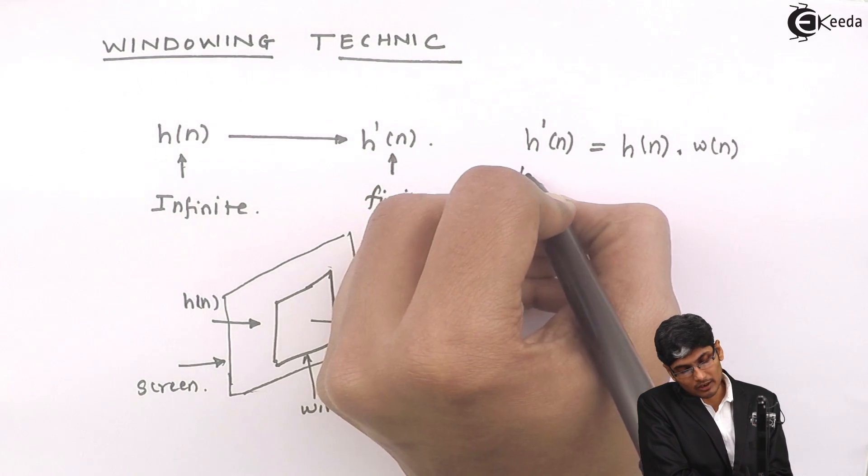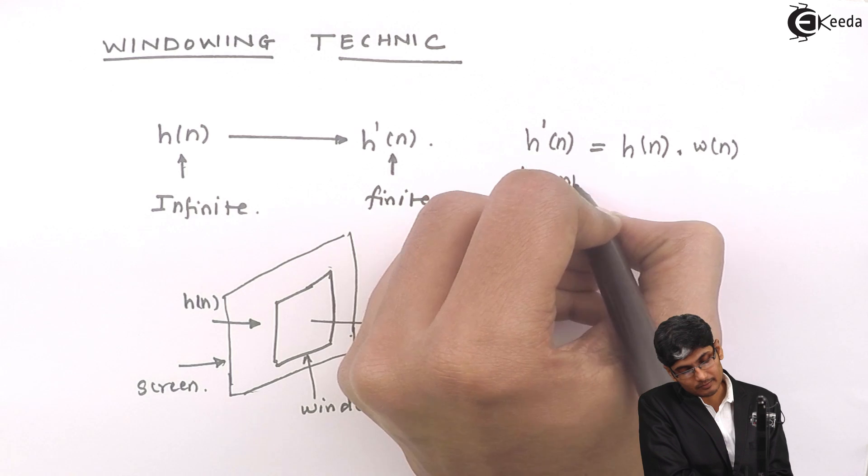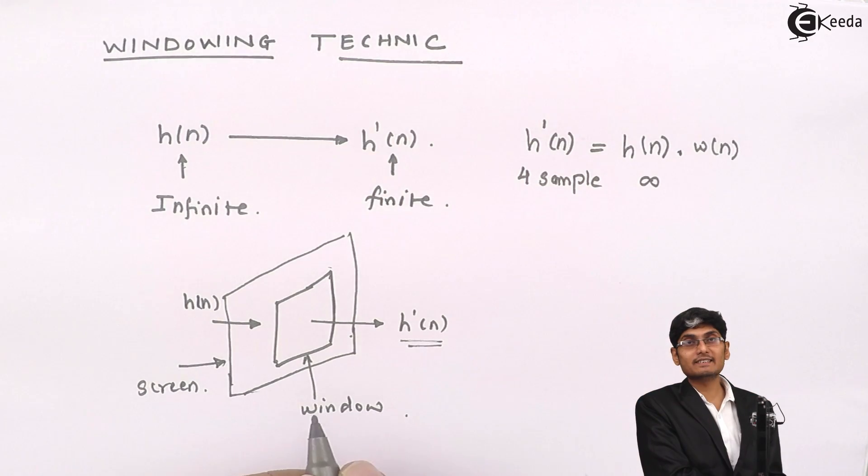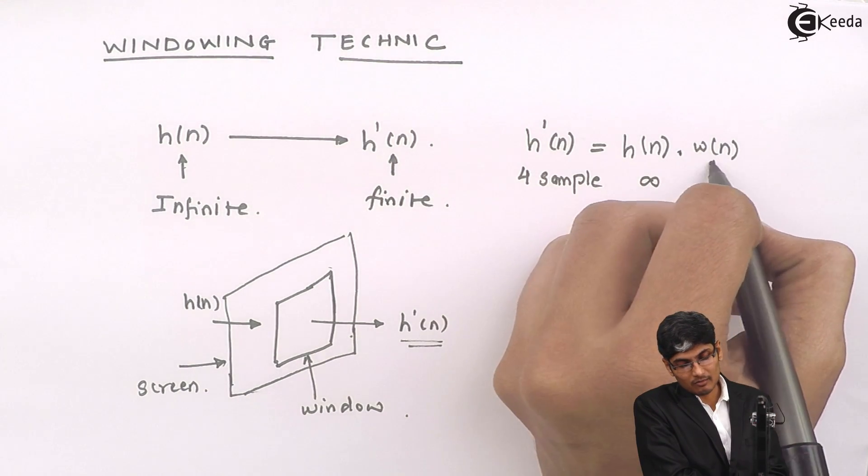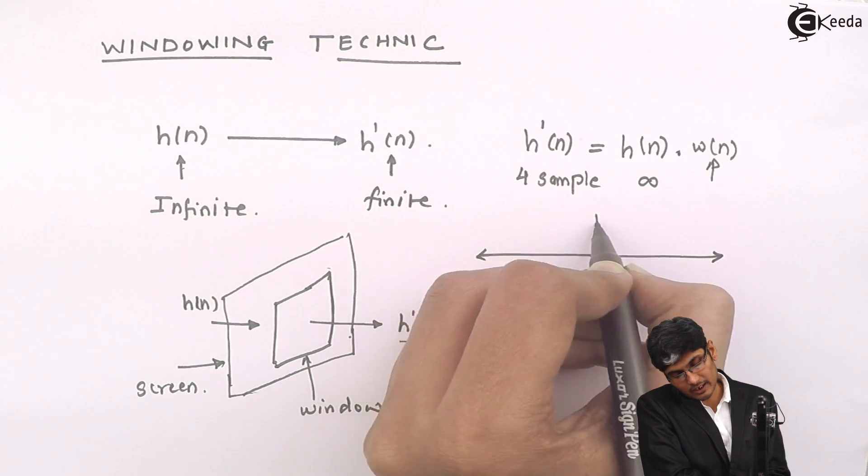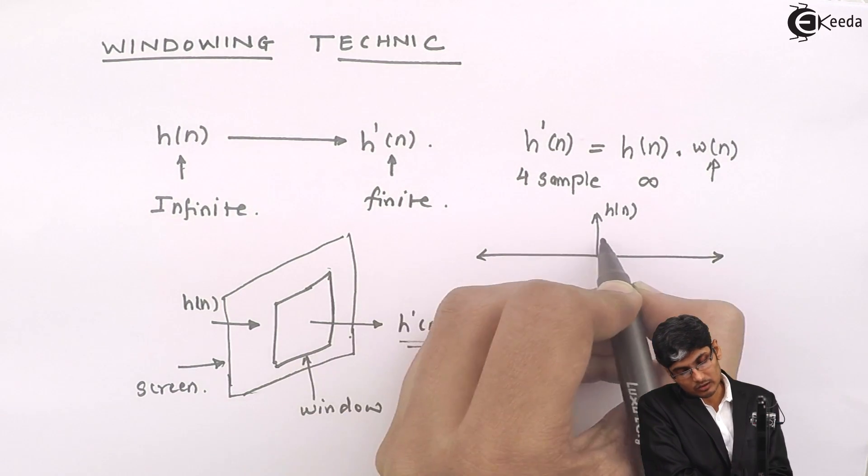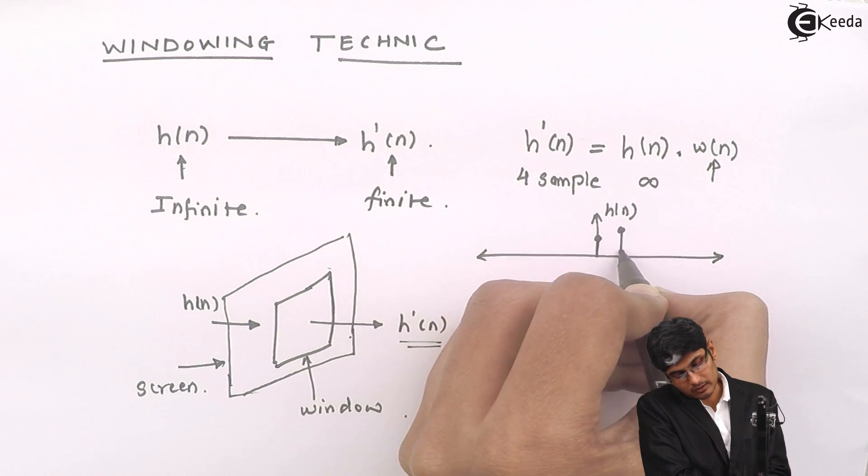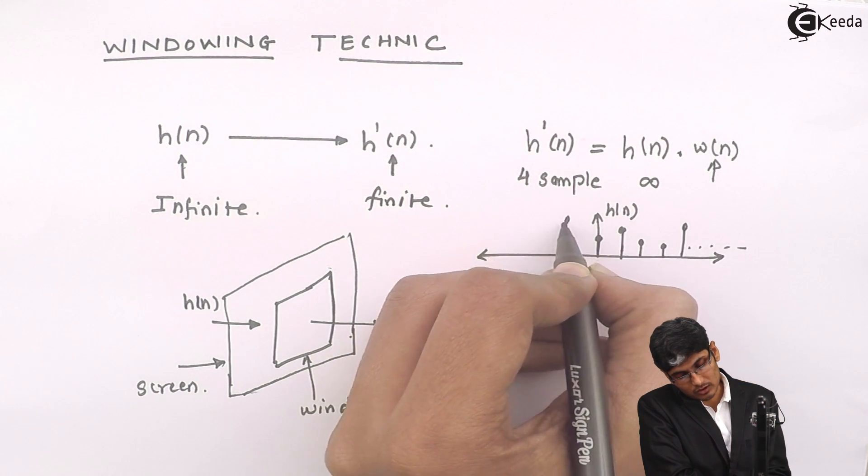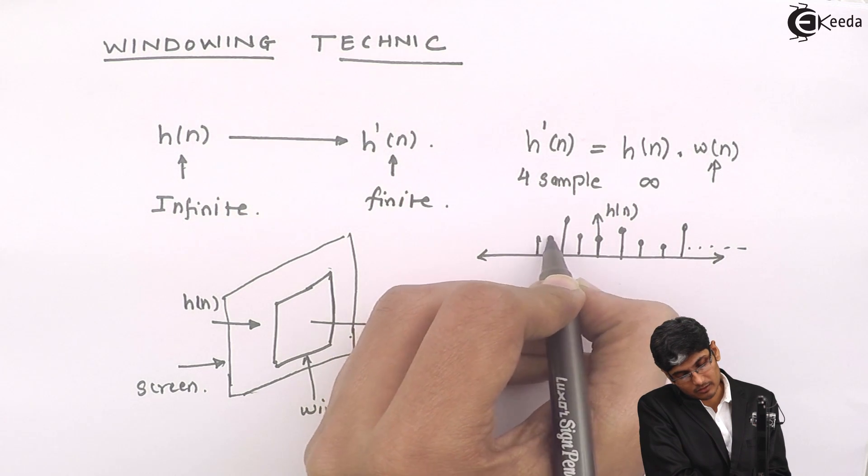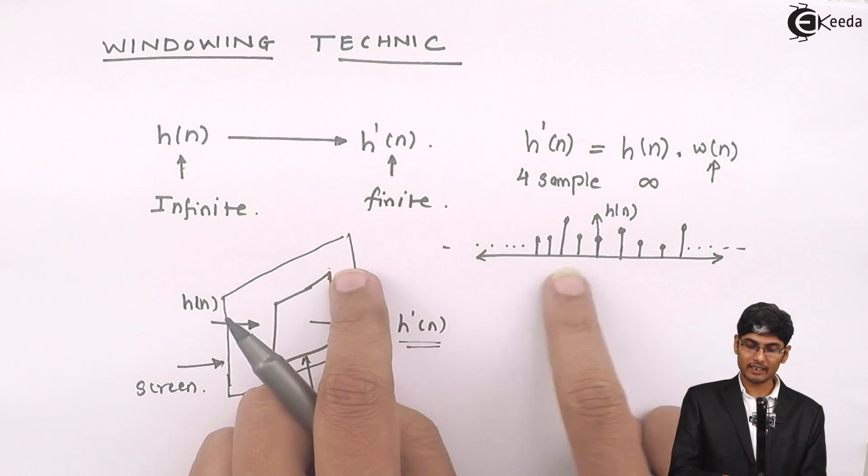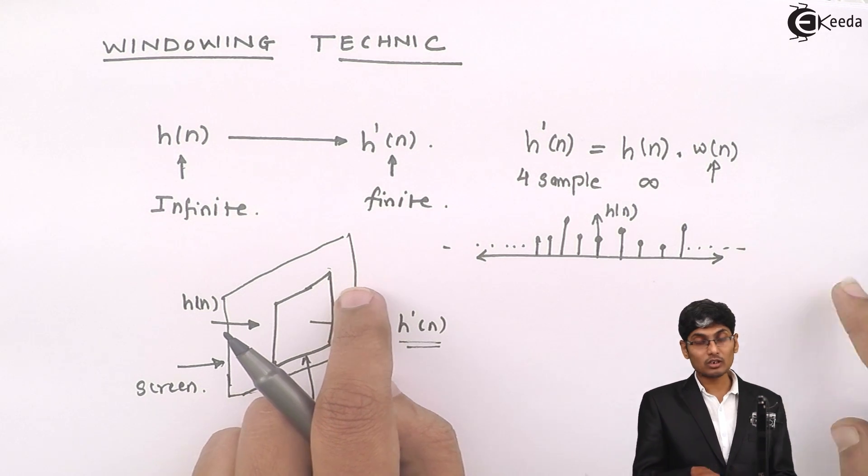Let's say for example, I want a 4 sample signal. I am having here infinite sample signal and I multiply it by some function w of n. Let's say that my function h of n looks like the first sample, second sample, third sample and so on. Here also there are many samples available. This is my h of n which is infinitely extending both in the negative n direction and positive n direction and I want only 4 samples.